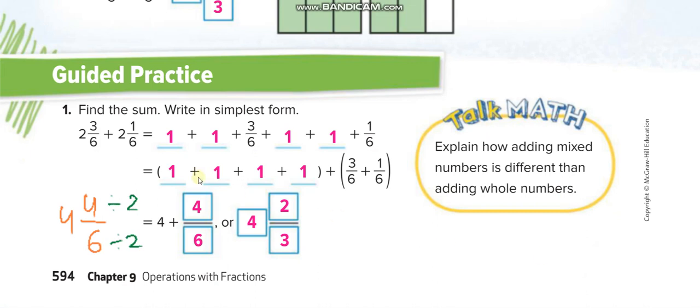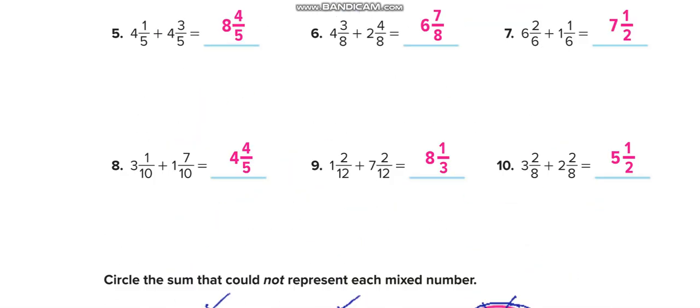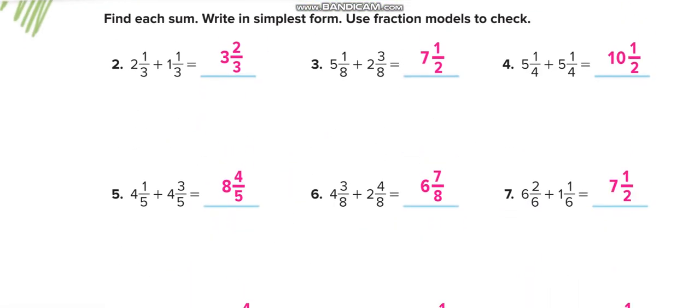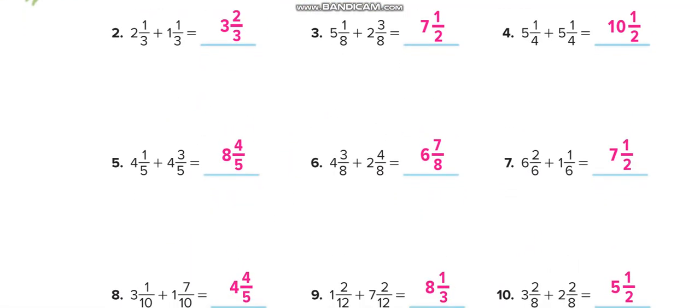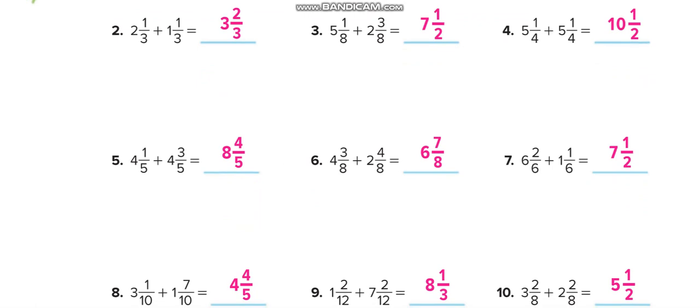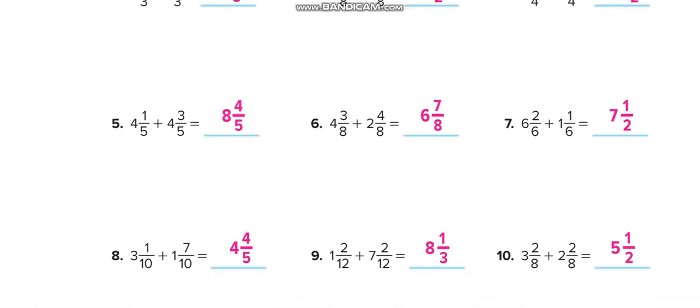Okay here, 2 plus 2, 4 and 3 plus 1, 4 over 6. Then we simplify it, divide by 2 up, divide by 2 down, so it will be 4 whole 2 over 3. Similarly you will solve all these examples in independent practice and then match your answers through this video.